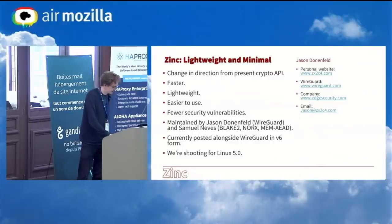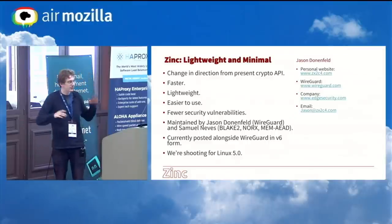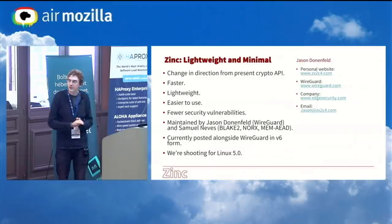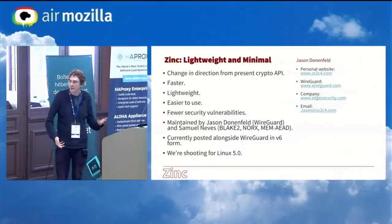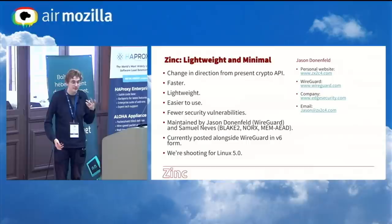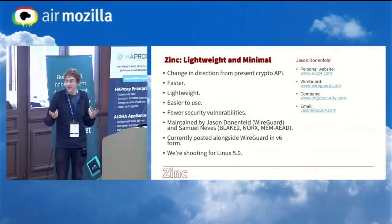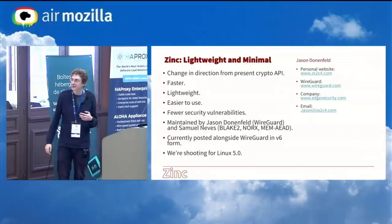That's the content. To recap: it's definitely a change in direction and style from the current crypto API, but one I think is needed. It's a lot faster, lightweight, easier to use, and will probably have fewer security vulnerabilities. It's being maintained by me and Samuel Neves, who is a cryptographer behind Blake2, NORX, and MMAAD. It's currently posted alongside WireGuard, it's in V6 right now, and we're shooting for Linux 5. There are a lot of people who like to nitpick on the mailing list and kind of filibuster these things indefinitely, so we'll see when we actually get it in.